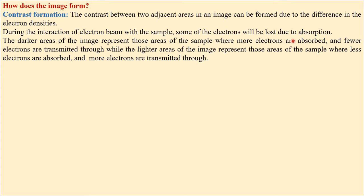The darker areas of the image represent those areas of the sample where more electrons are absorbed and fewer electrons are transmitted through, while the lighter areas of the image represent those areas of the sample where less electrons are absorbed and more electrons are transmitted through.